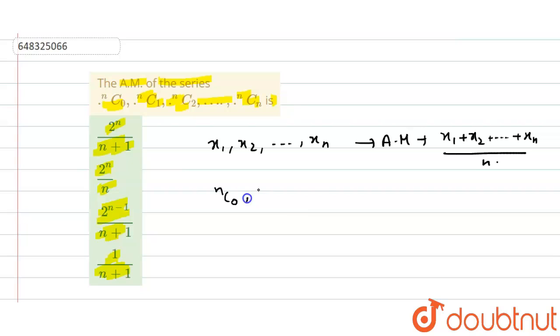Now given nC0, nC1, nC2, ... nCn, we have to find their arithmetic mean, which is (nC0 + nC1 + nC2 + ...